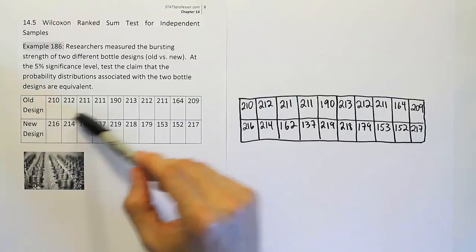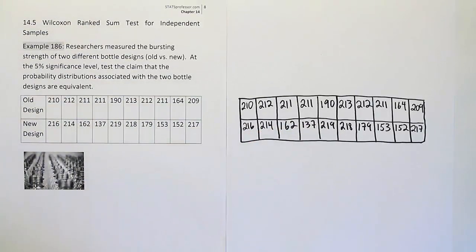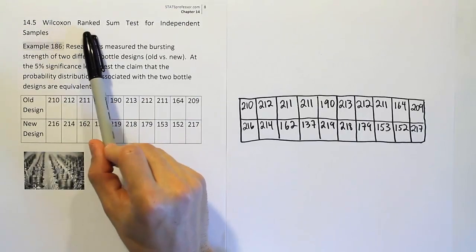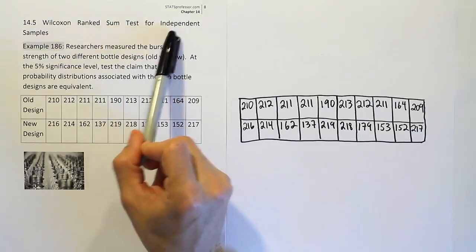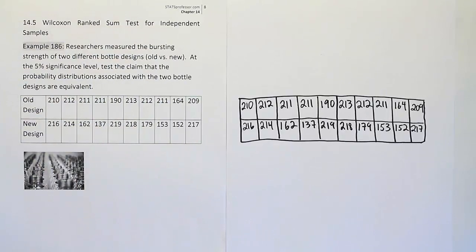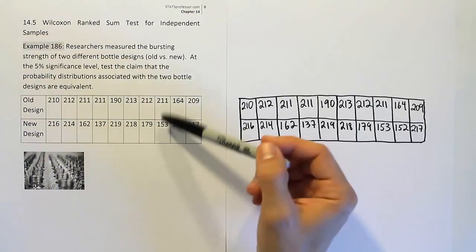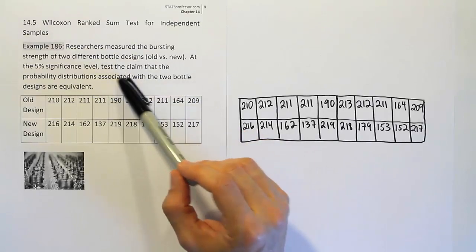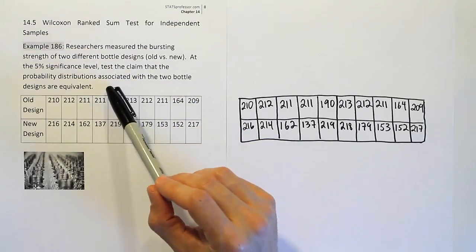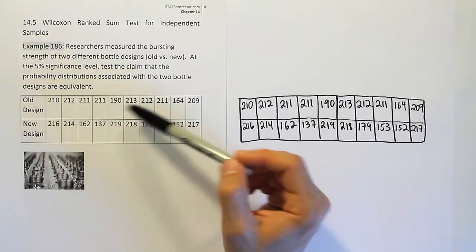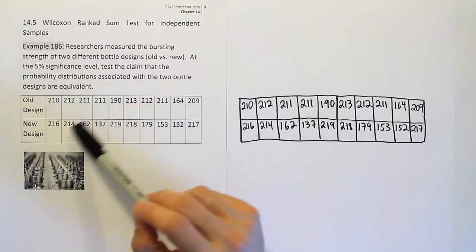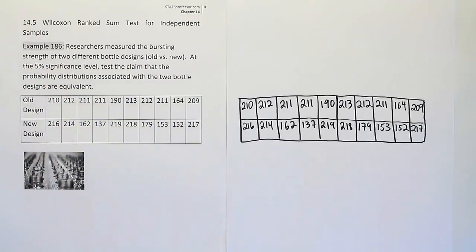We're looking at some bursting strength numbers for the two types of bottles, and we want to make this comparison using the Wilcoxon Ranked Sum Test for independent samples. The sample sizes are small, there's no mention that anything is normally distributed, and we have two independent samples because they're two different types of bottles.